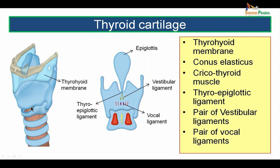Inferiorly, the inferior border of the thyroid cartilage is connected to the anterior arch of the cricoid cartilage by the conus elasticus or the cricovocal ligament. The posterior surface of the thyroid laminae shows the presence of the thyroepiglottic ligament which connects the posterior aspect of the thyroid angle to the lower end of the epiglottis in the midline. Inferior to it we see attachment of a pair of vestibular ligaments, and more inferiorly a pair of vocal ligaments.